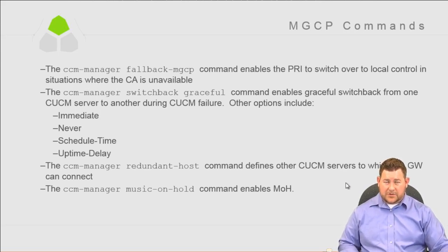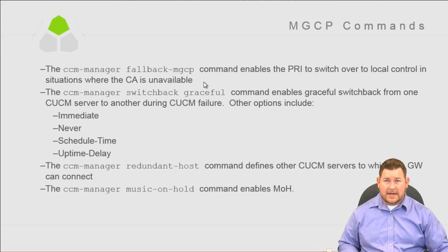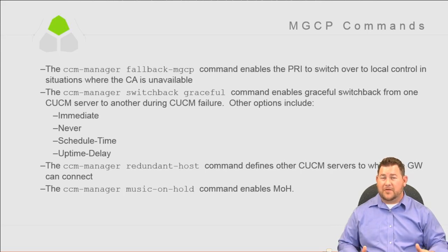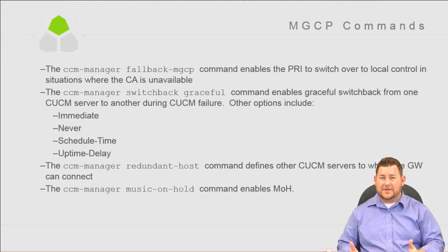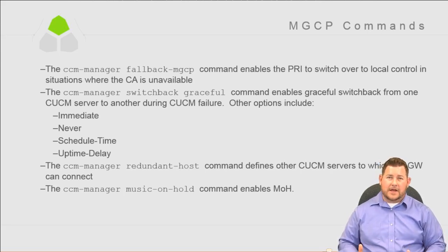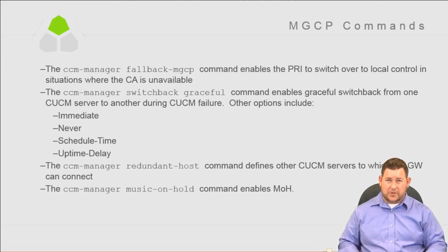MGCP commands. The CCM manager fallback MGCP command enables the PRI to fall back somewhere if it loses connection to the call engine. This is useful in an SRST — Survivable Remote Site Telephony — scenario where you lose your WAN link. If you're using an MGCP gateway and lose your WAN link, your call control is gone because the gateway is a slave to Communications Manager. With fallback MGCP, it falls back to H.323, which is the service alternate default command.